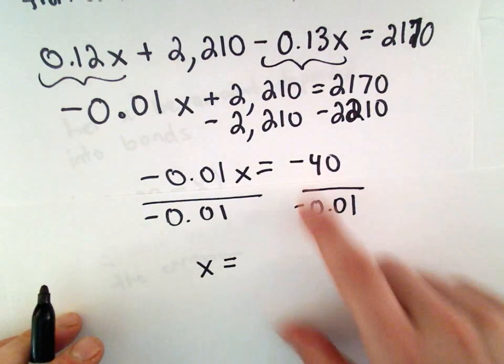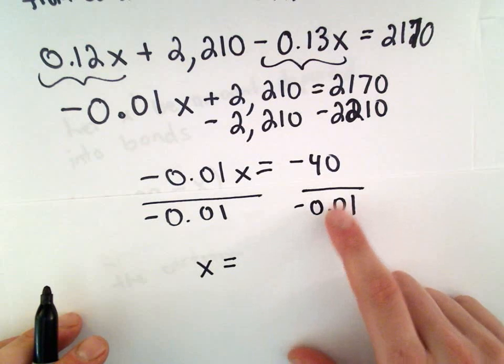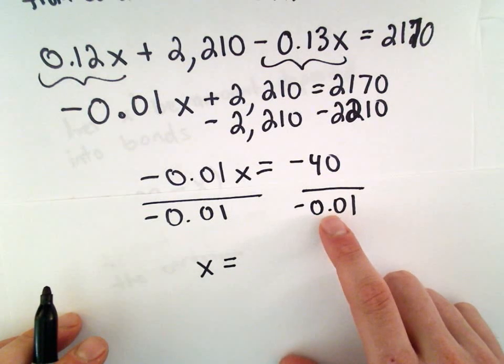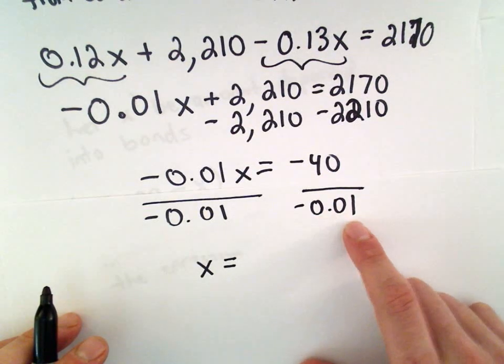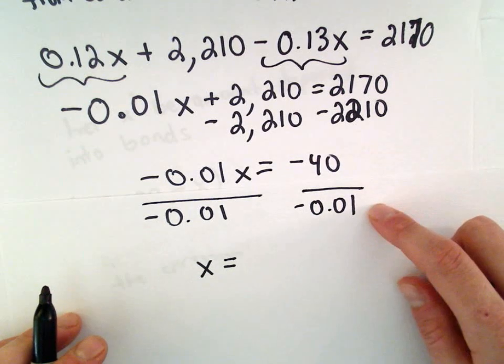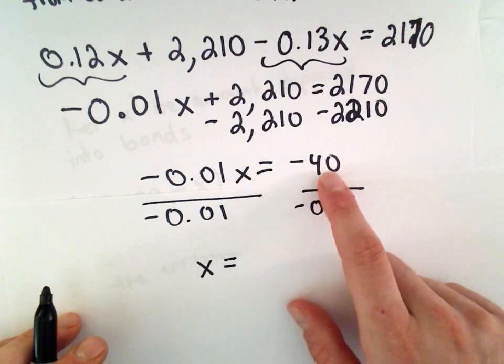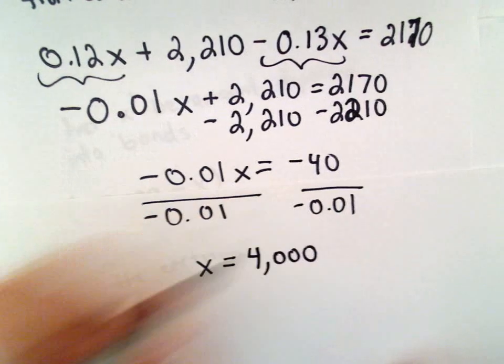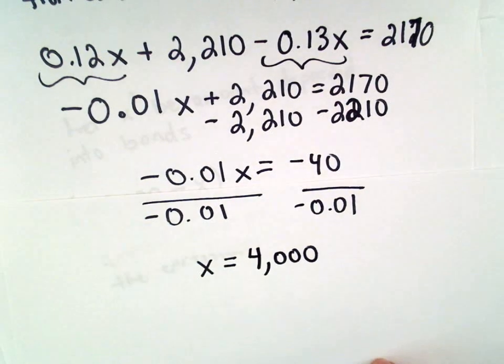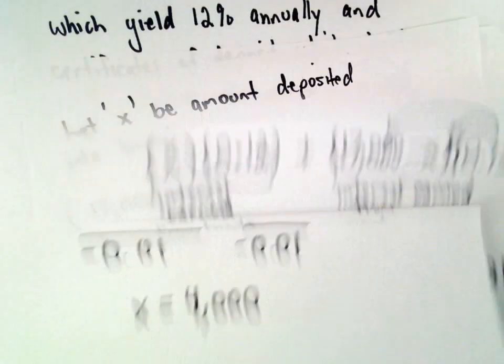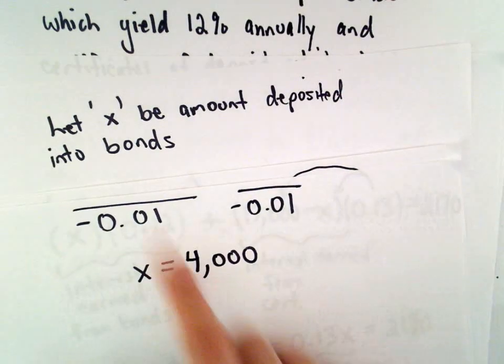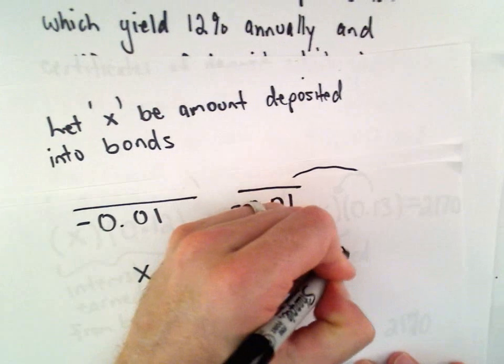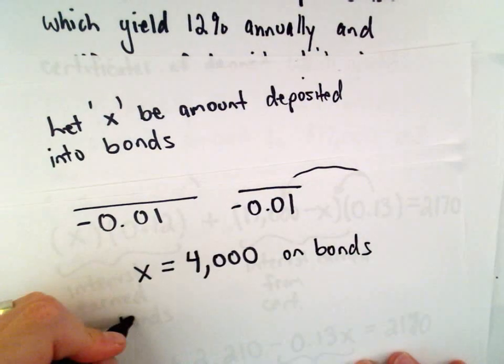The two negatives will cancel out on the right and make a positive. And 40 divided by 0.01, you can multiply the numerator and denominator by 100. That would give you 4,000 over 1. X equals 4,000. So now we know that she spent $4,000 on bonds and the remaining $13,000 on certificates.